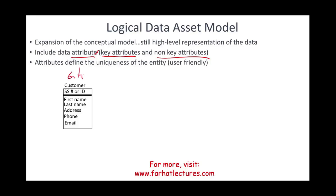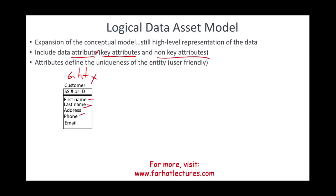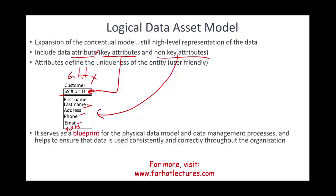The customer entity will have attributes: first name, last name, address, phone number, email, date of birth, and we could also have a social security number or ID for the customer. The upper part — above the dashed line — is the key attribute, a key identifier unique to this entity. The others below this line are non-key attributes: first name, last name, address, phone number, and so on. This picture serves as the blueprint for the physical data model and the data management process, and helps ensure that data is used consistently and correctly throughout the organization.